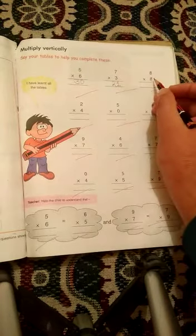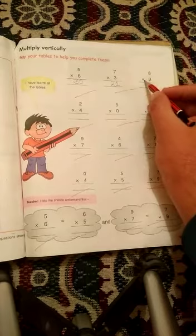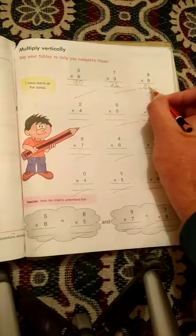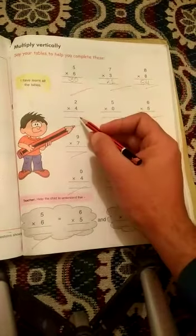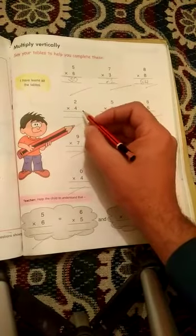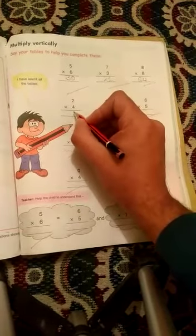Next one is 8 into 8. So 8 8s are 64. So right here, 64. Next question is 2 into 4. So 4 2s are 8. So right here, 8.